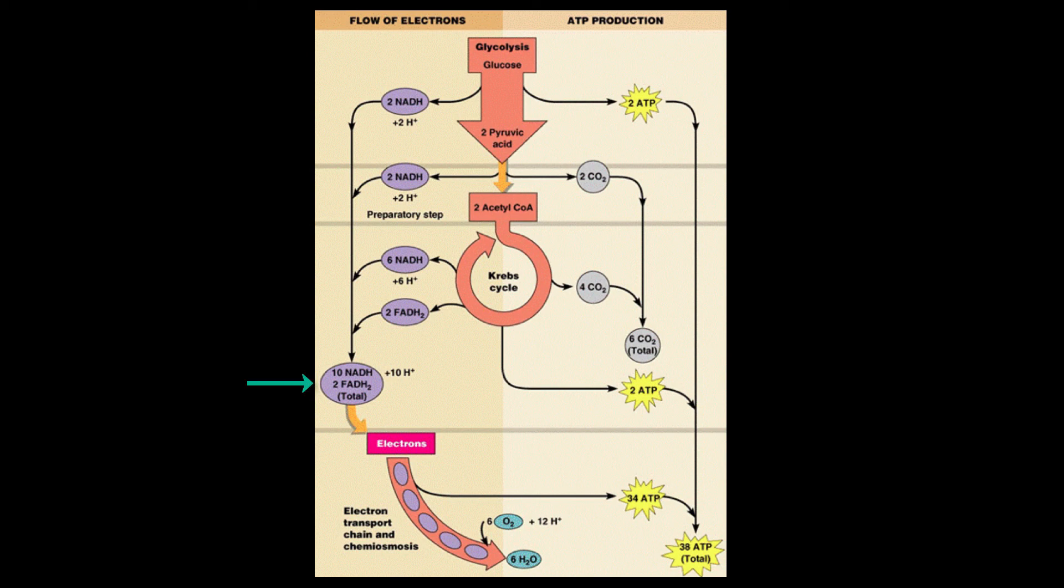We produce 2 FADH2 in the Krebs cycle. Since 2 ATP are going to be produced for each FADH2, we're going to produce 4 total ATP. So here in the electron transport chain, we're going to make a total of 34 ATP.